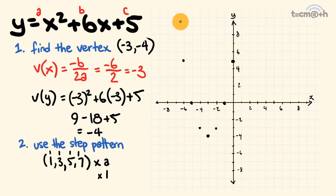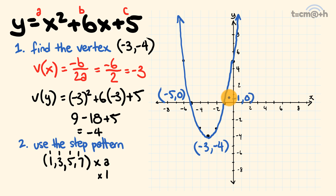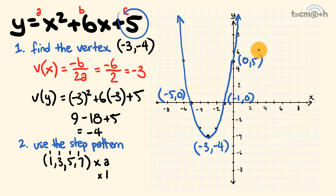Let's draw the parabola in now. We come down through the outer points, through the closer points, continue around to the vertex, go around and up. There we have our parabolic curve. The vertex is at negative 3, negative 4. We have two x-intercepts: one at negative 5, 0 and one at negative 1, 0. The y-intercept is at 0, 5. Notice that the y-intercept equals the c value — c tells us the y-intercept straight away. Handy when drawing the graph.